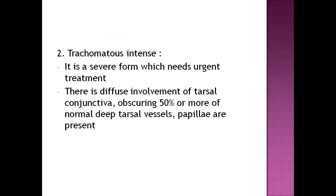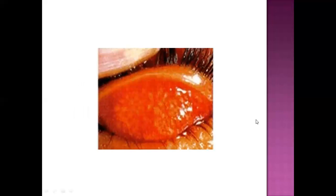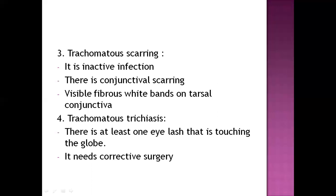Trachomatous intense is the severe form that needs urgent treatment, as there is involvement of tarsal conjunctiva and 50 percent or more of the area is already involved in infection. The intense form looks more red than the follicular form. Trachomatous scarring is an inactive infection with conjunctival scarring and visible fibrous white bands on the tarsal conjunctiva.